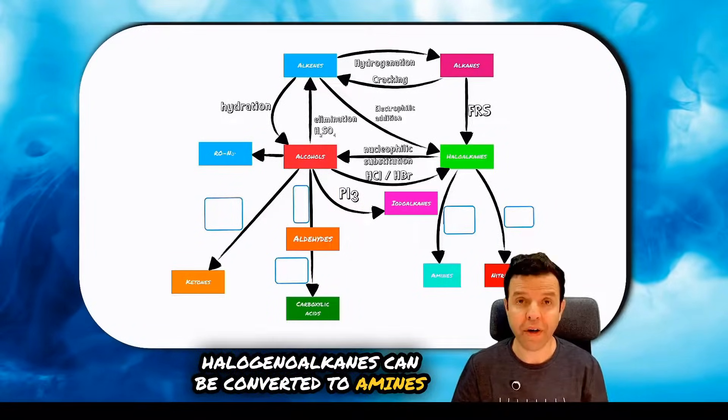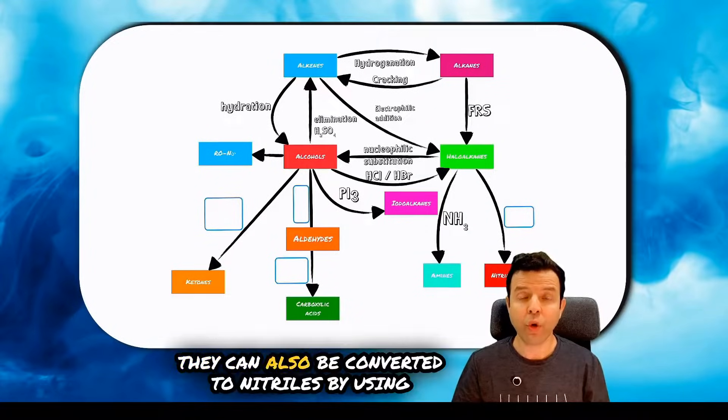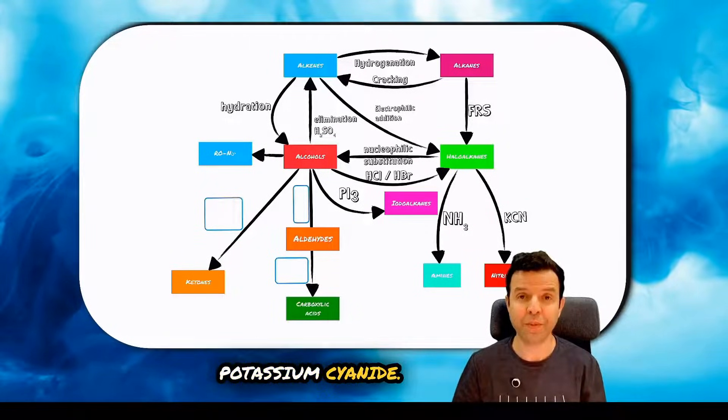Halogenolkenes can be converted to amines by using ammonia. They can also be converted to nitriles by using potassium cyanide.